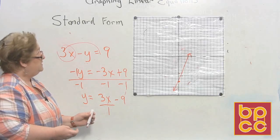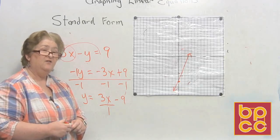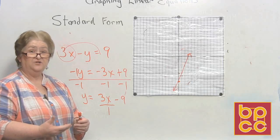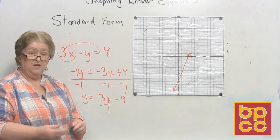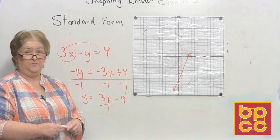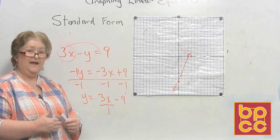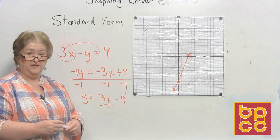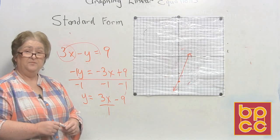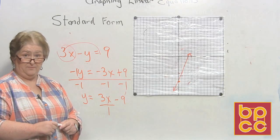So in this lesson, what have we done? We know the difference between standard and slope-intercept form. We graphed several equations already prepared in slope-intercept form. Then we took standard form equations, changed them into slope-intercept, and graphed. I hope you had a good time doing that — and make sure you keep lots of graph paper with you!